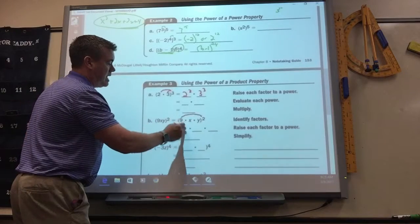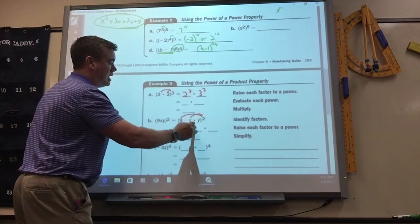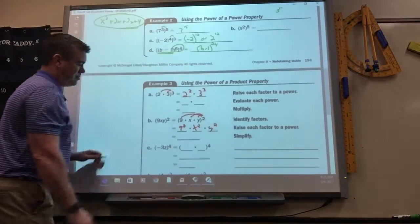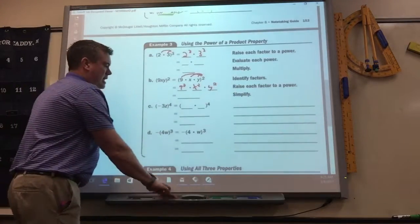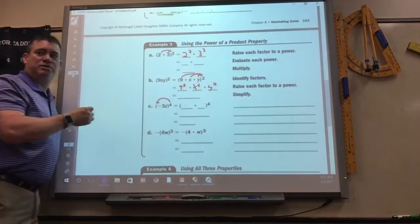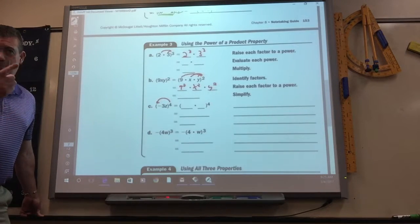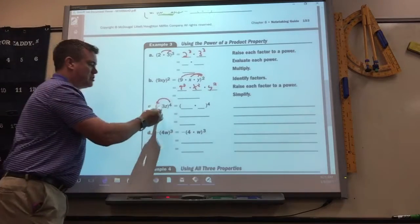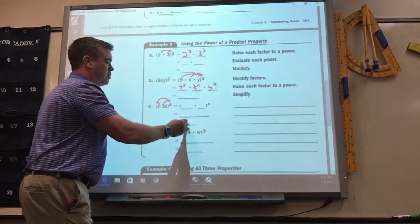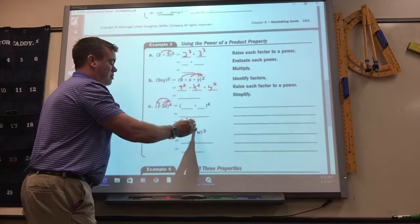So here would be 9 squared, x squared, y squared. Here, if you take the negative and raise it to the 4th, what's going to happen to the negative? Positive, yep. So that will just disappear. And then you do the 3. So it would be 3 to the 4th, z to the 4th.